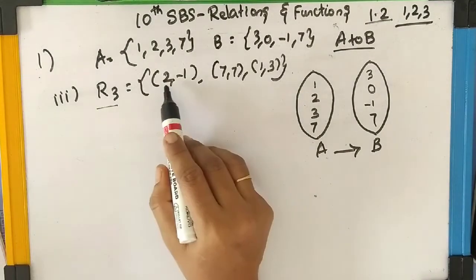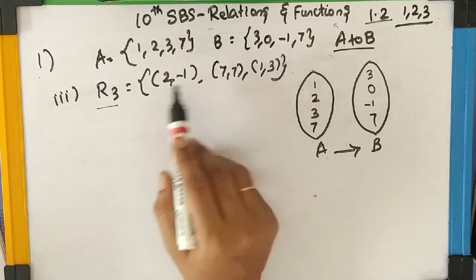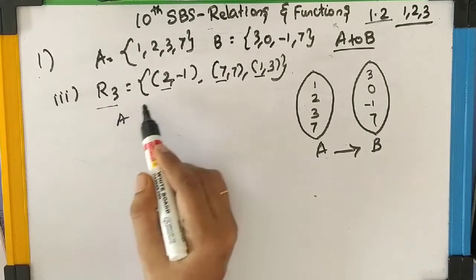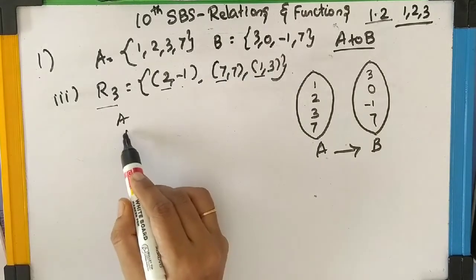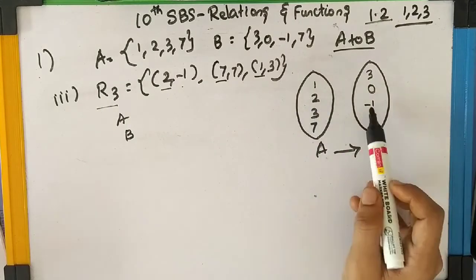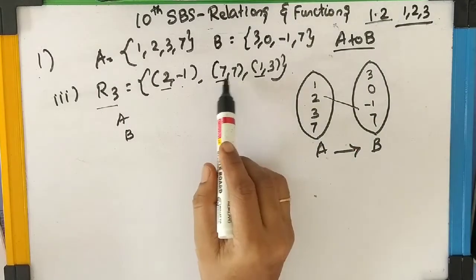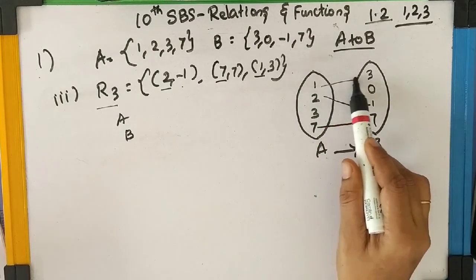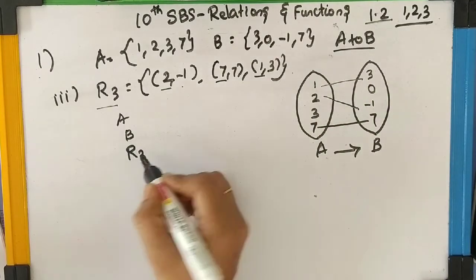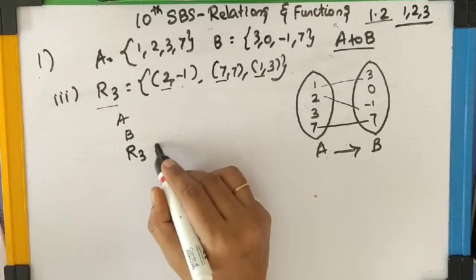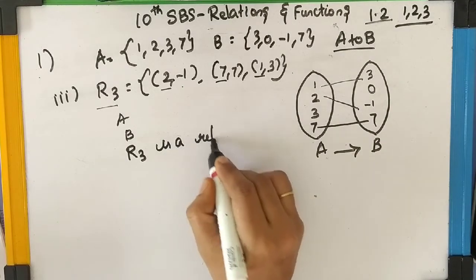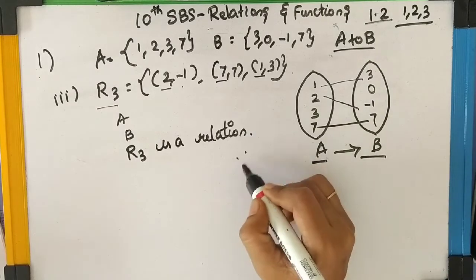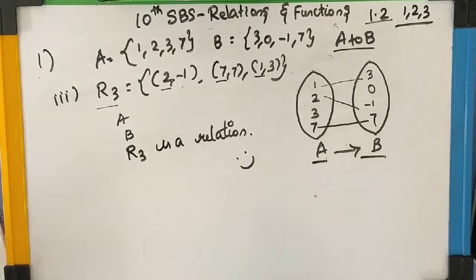R3 = {(2,-1), (7,7), (1,3)}. The first elements belong to set A and second elements belong to set B, because the relation is from A to B. Checking: (2,-1) — 2 is in A and -1 is in B, yes. (7,7) — 7 is in A and 7 is in B, yes. (1,3) — 1 is in A and 3 is in B, yes. All three pairs are possible. Therefore, R3 is a relation from A to B.